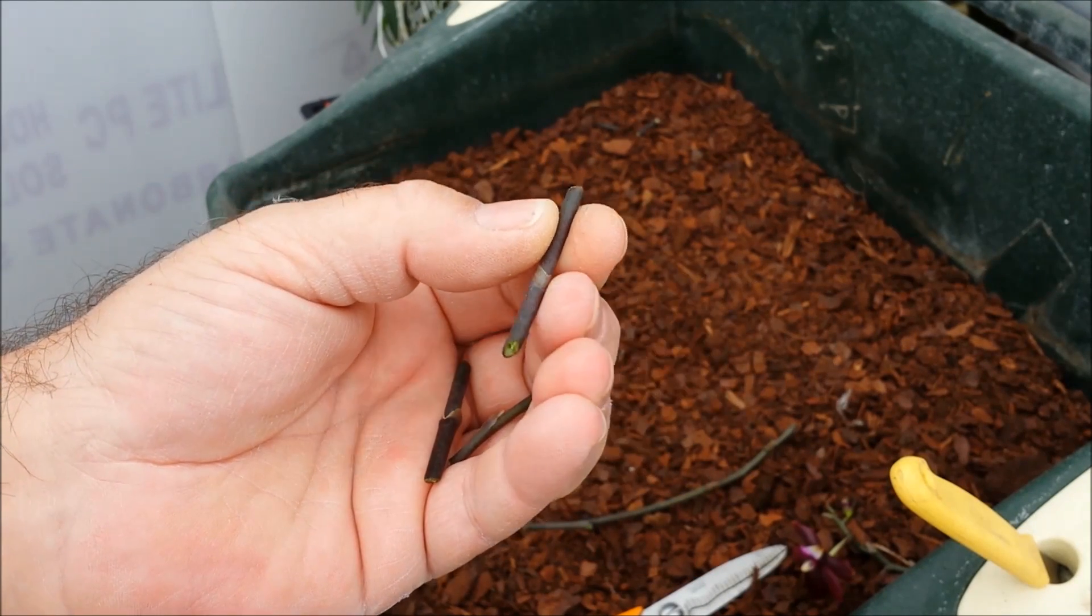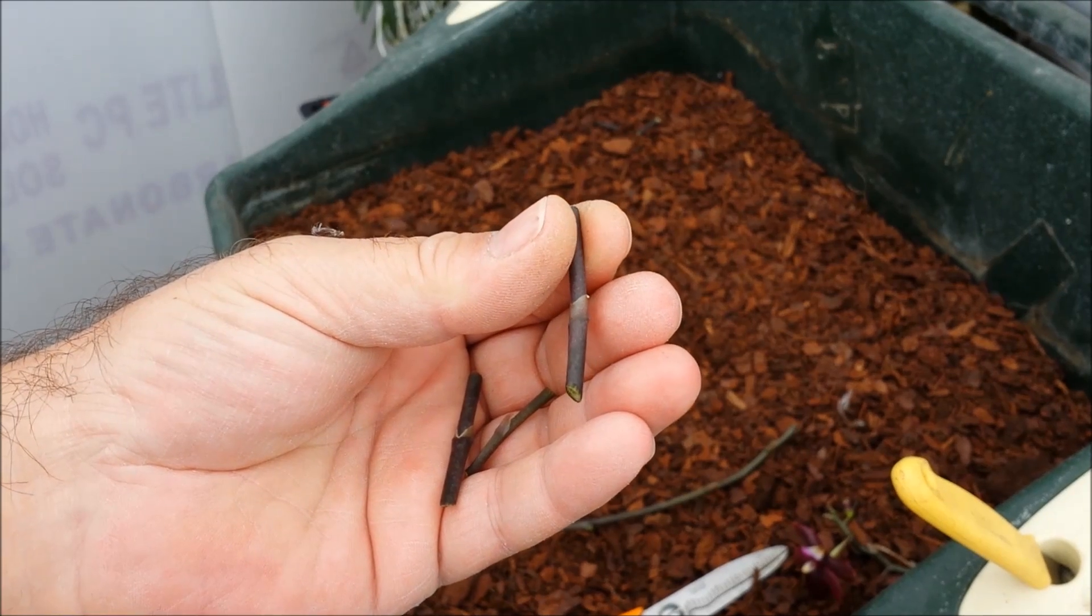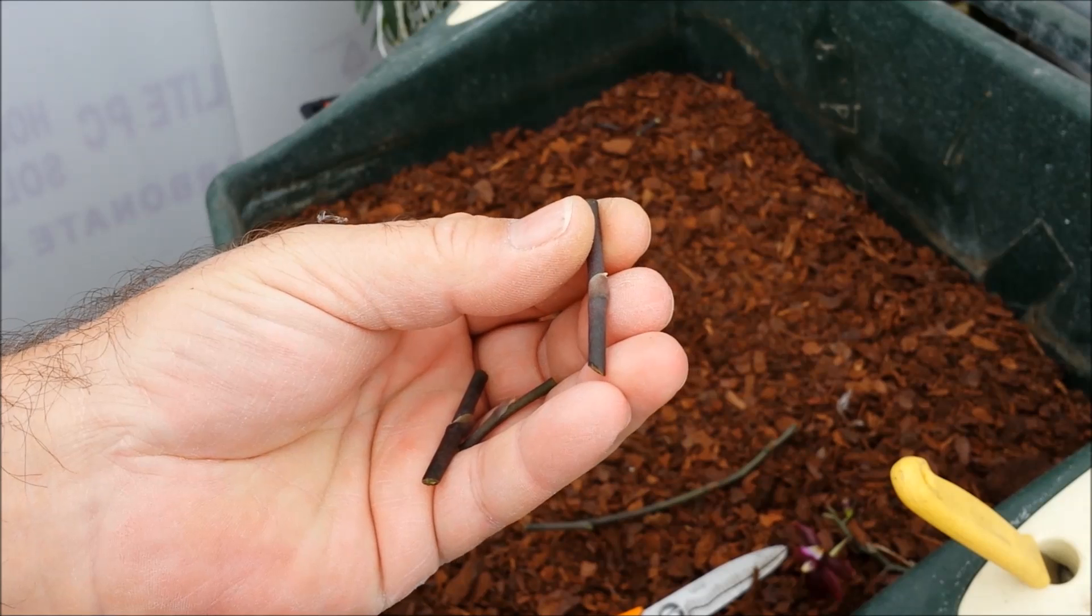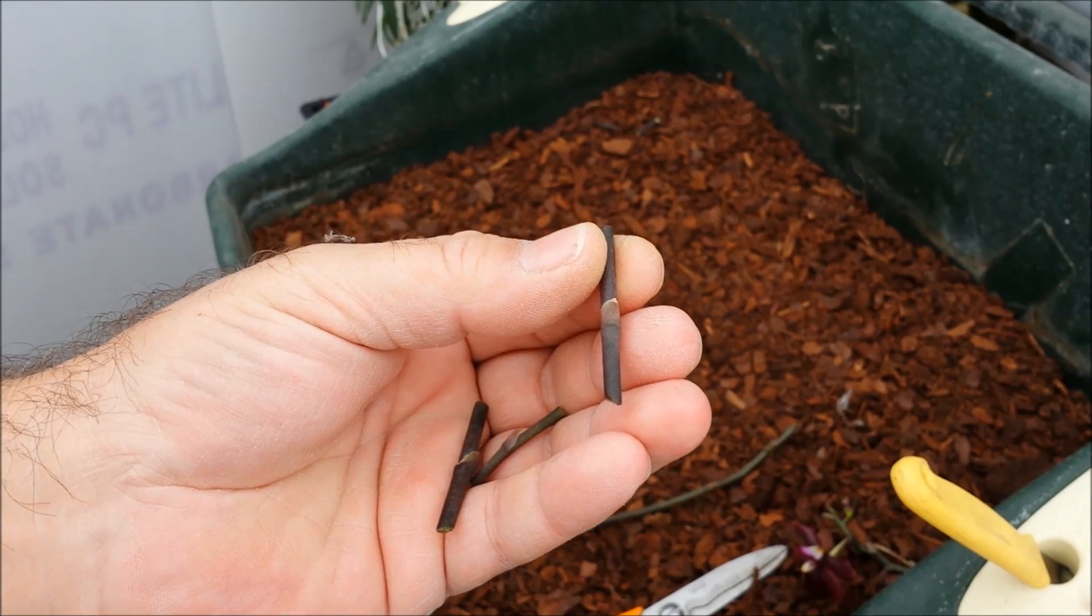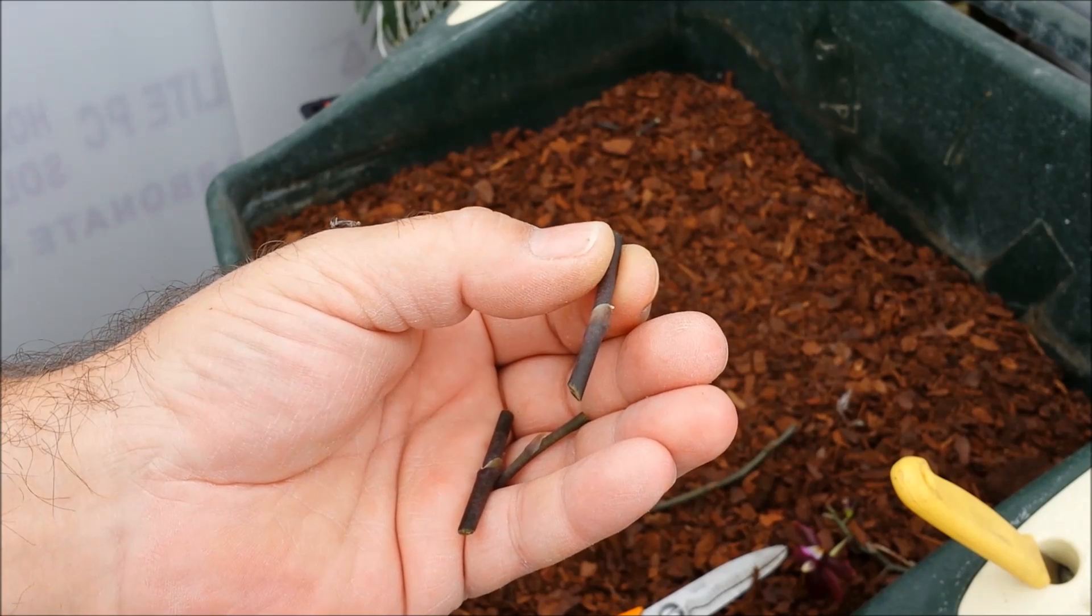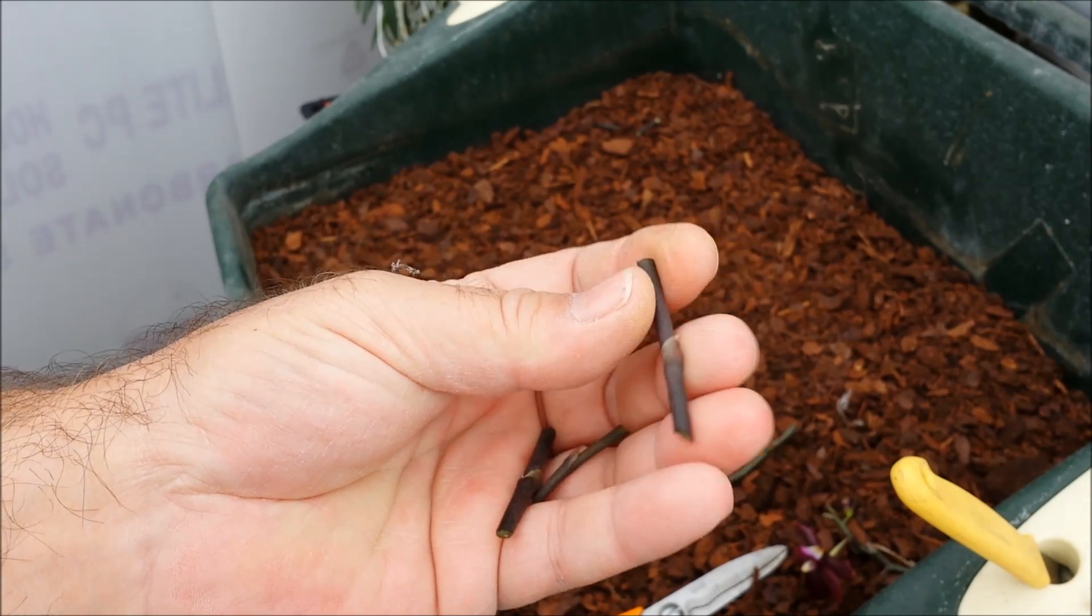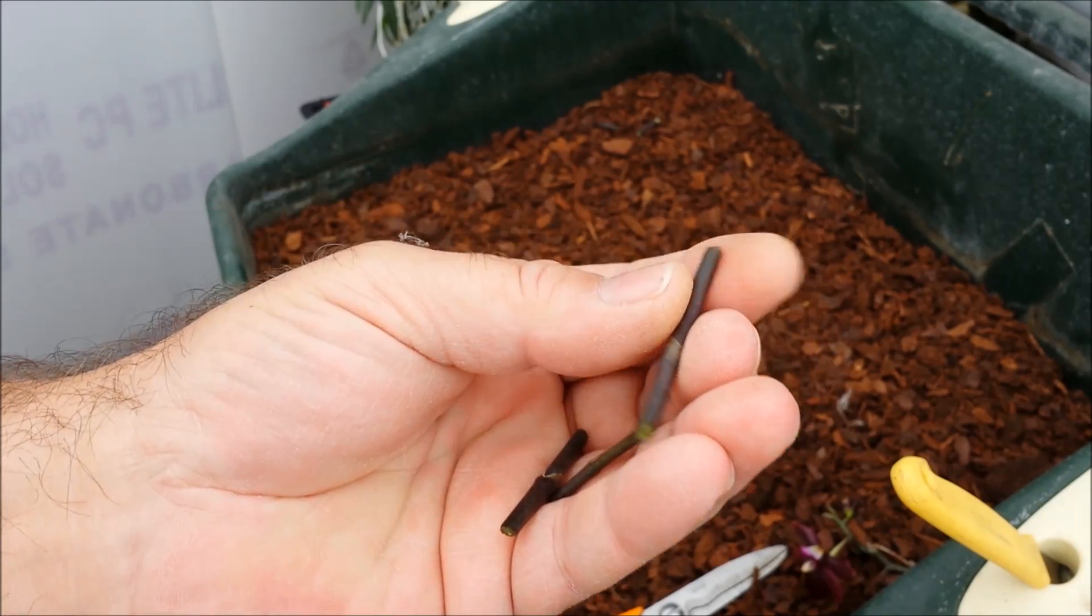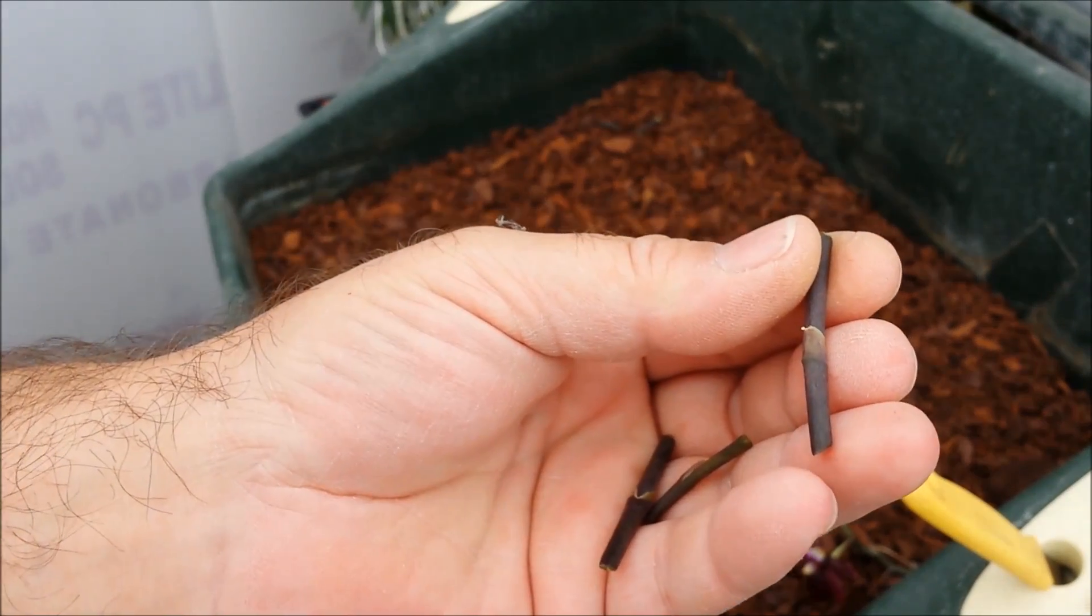Good afternoon folks. Today what I'm going to be showing you is how to use our flasklets containing multiplication media to propagate phalaenopsis using old flower stems. Now, as you can see, this flower stem I've got in my hand at the minute, if you look carefully you'll notice